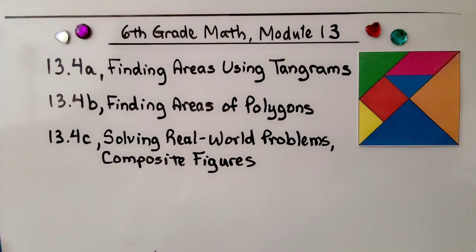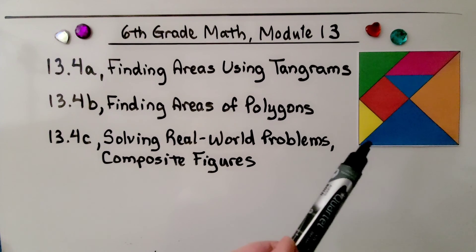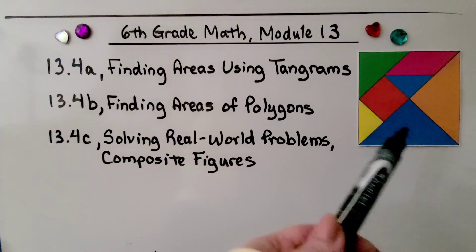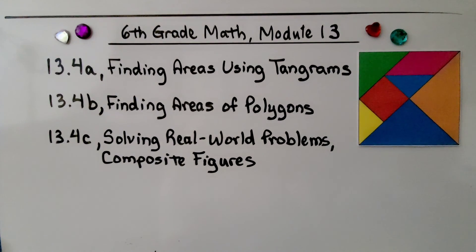We're finished with lesson 3.3 and we're going to move on to lesson 3.4, which is split into three parts. The first part, we're going to be finding areas using tangrams. And if you've never heard of that before, a tangram is a puzzle that's made out of seven polygons called tans. And they can be rearranged to make a bird or a house or a rocket or a cat, some other things. And we'll talk about that.